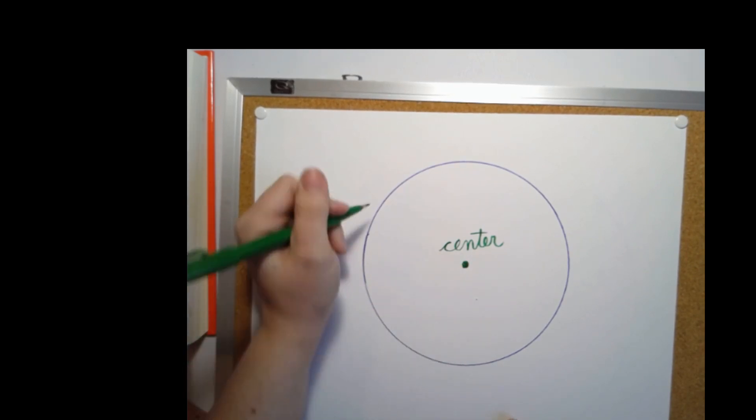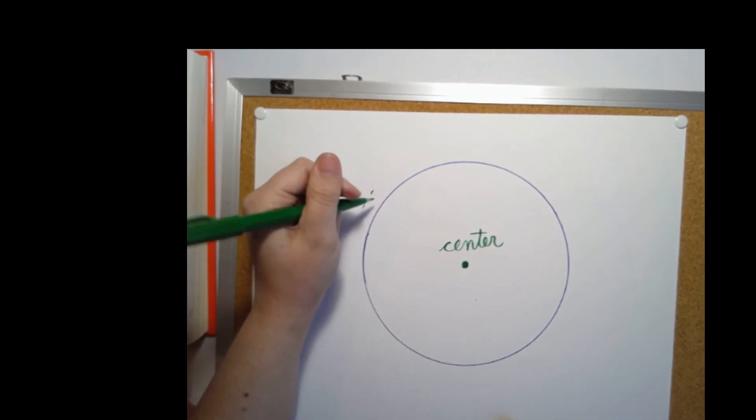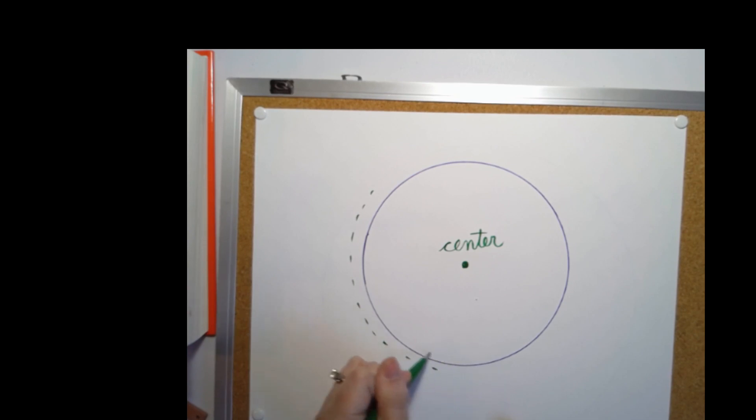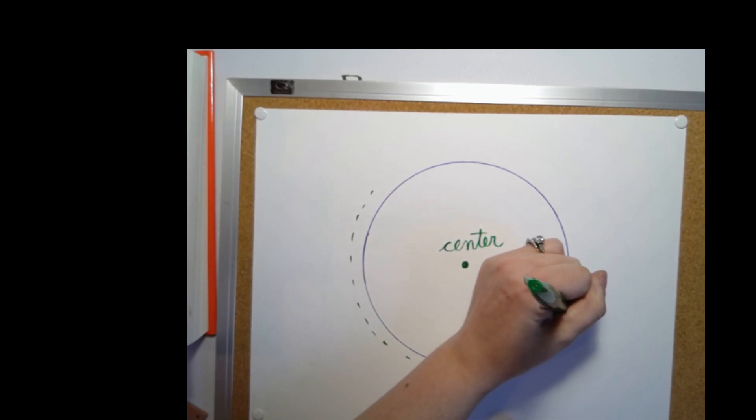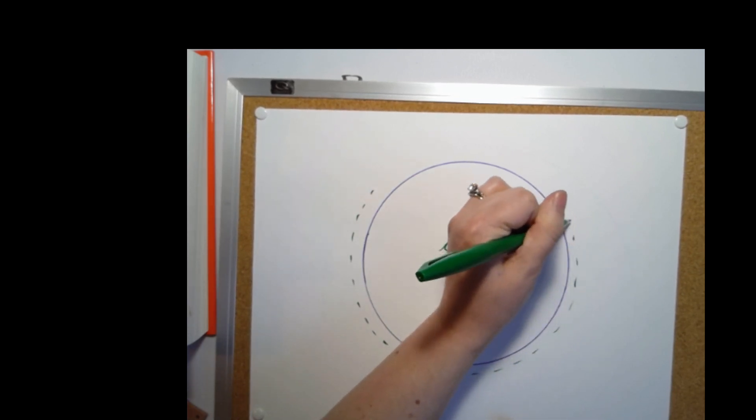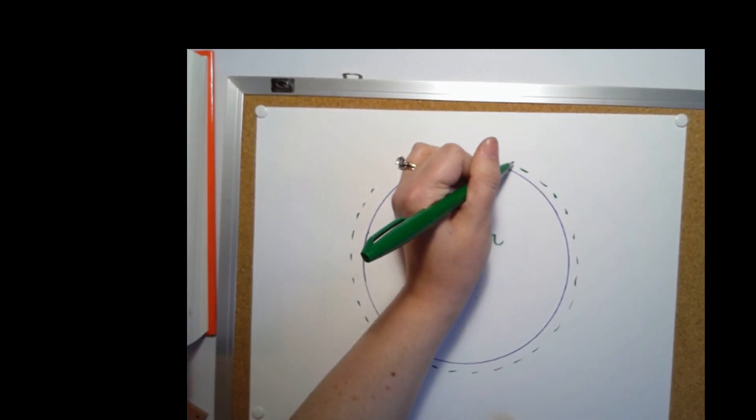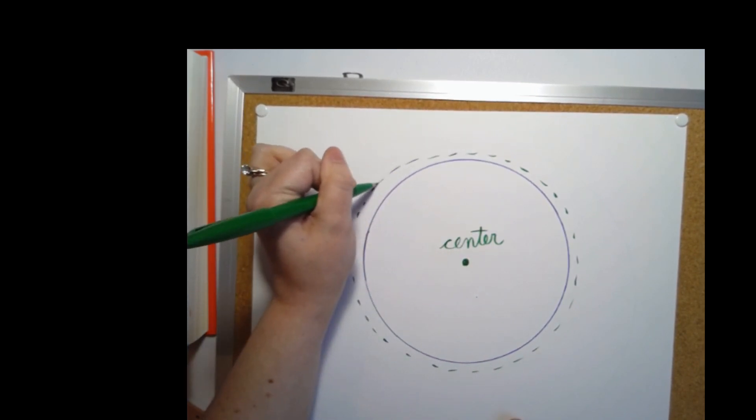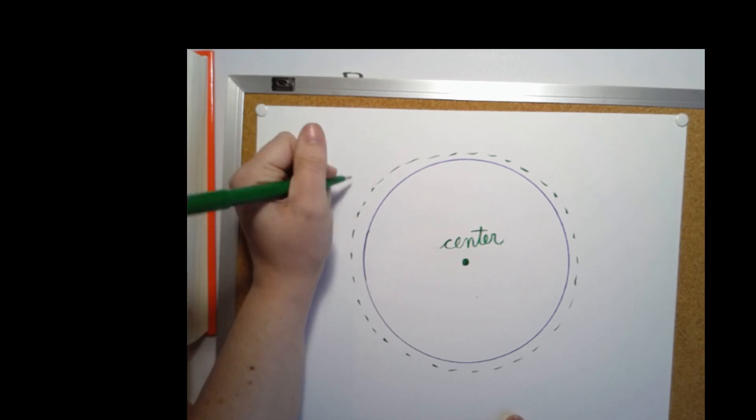And this all the way around the outside. So this whole line here, the purple line that we drew, is called the circumference.